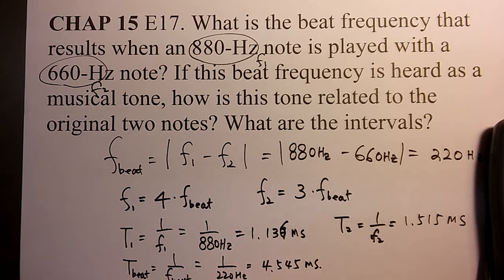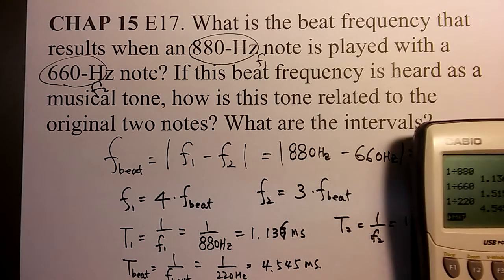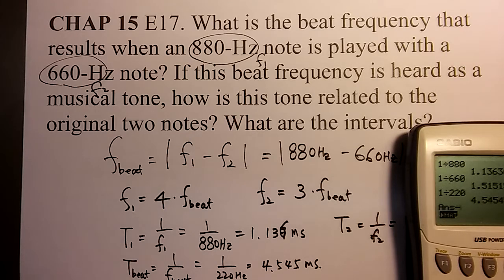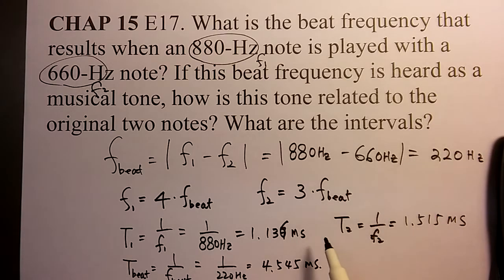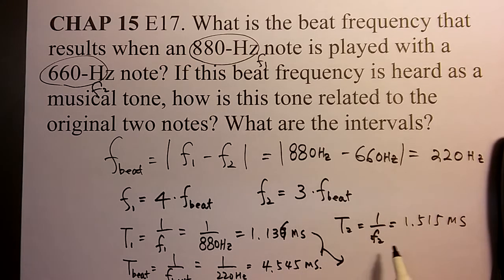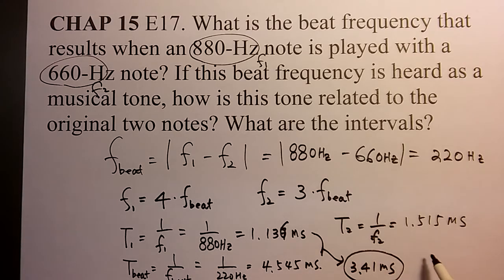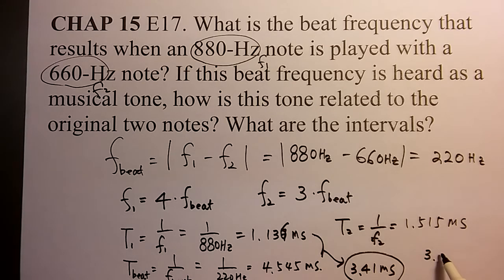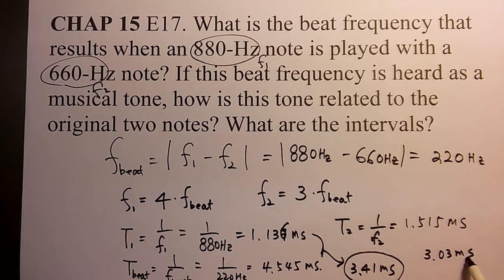And the interval between that, between T1 and T beat, becoming this minus 1.136 times 10 to the power of negative 3. The frequency interval becoming 3.41 milliseconds, and that two interval becoming 3.43 milliseconds.